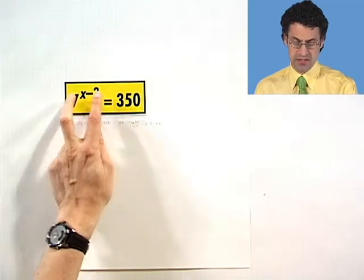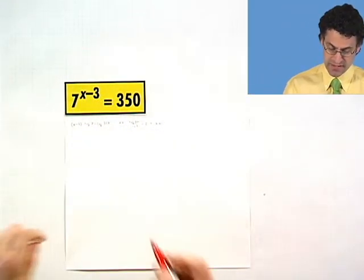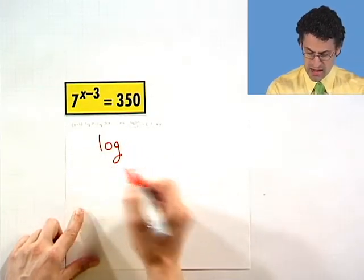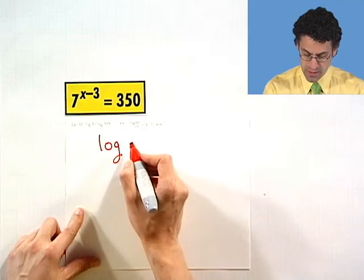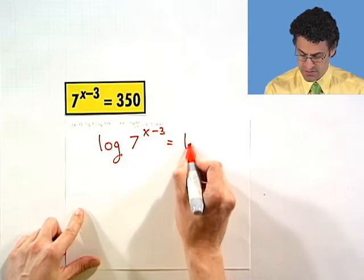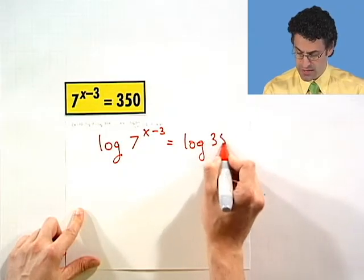So instead I'm going to use that second property we talked about which is just to take the log of both sides because then I can turn this exponent into a coefficient. So if I take the log of both sides I'll have log of 7 to the x minus 3 equals log of 350.